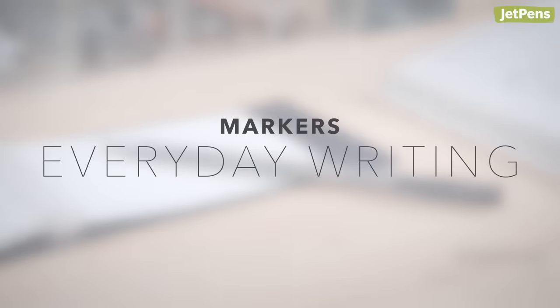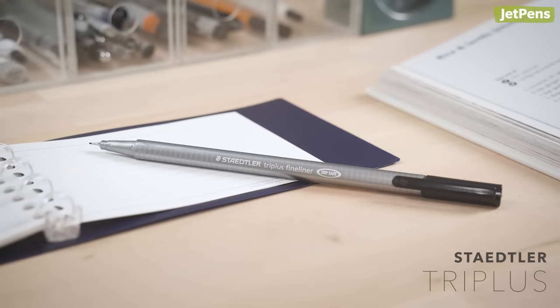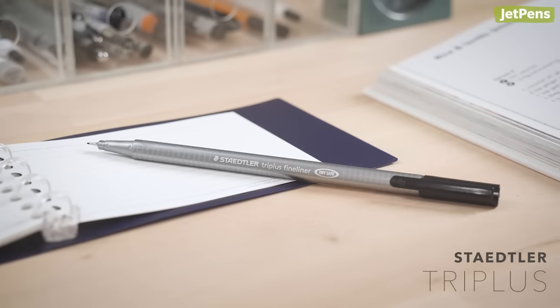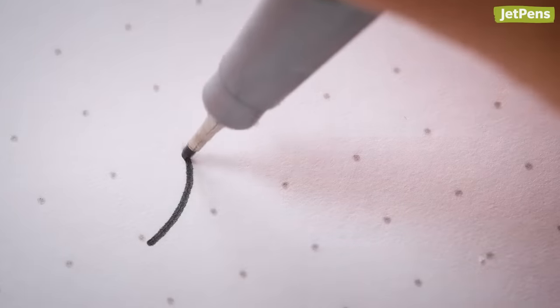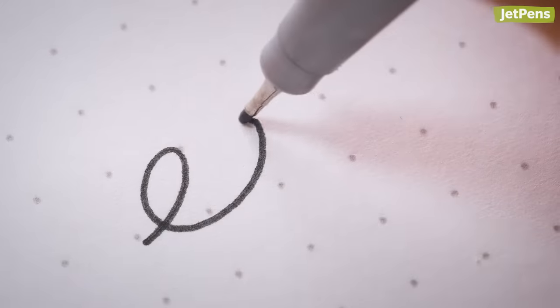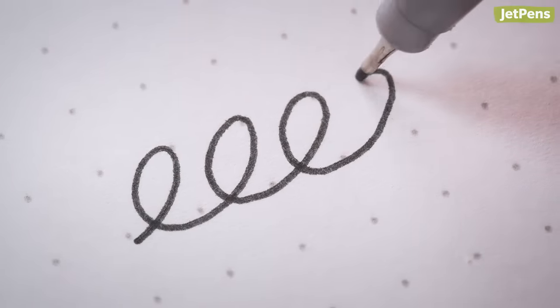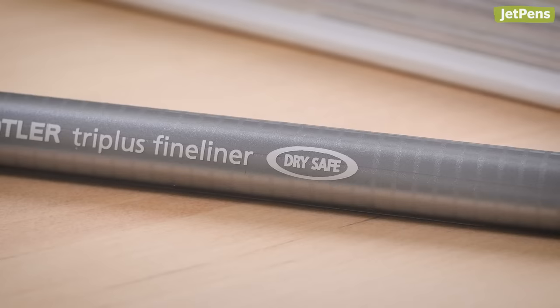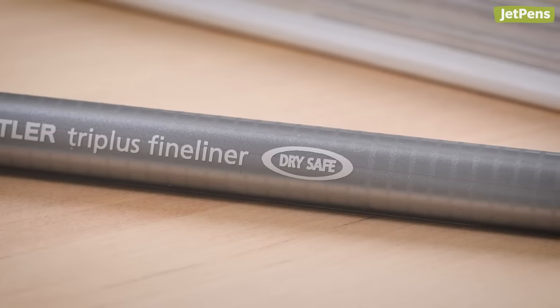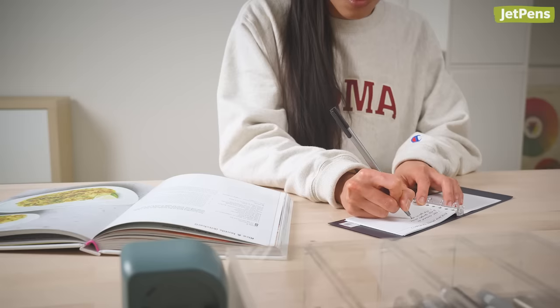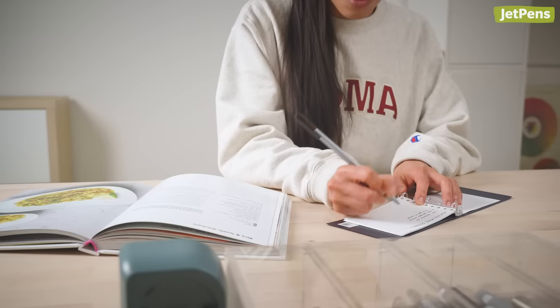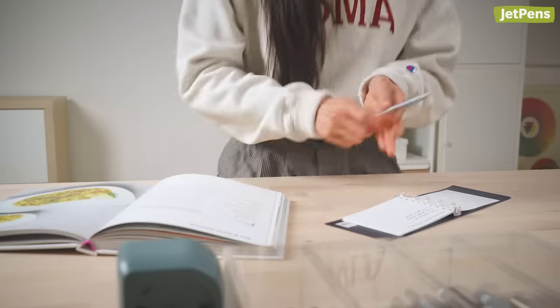For Everyday Writing. The Staedtler Triplus is a no-frills fineliner that just works. Its 0.3 mm felt tip is great for everyday writing, but it's reinforced with a metal sleeve for extra durability. Its dry-safe feature ensures that it won't dry out if it's left uncapped, so you can spend plenty of time pondering what you want to write down, or if you need to check the oven.